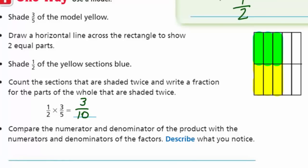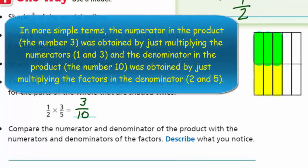Now let's compare the numerator and denominator of the product with the numerators and denominators of the factors. Describe what you noticed. I'm comparing my numerators and denominators. I see what's going on here — can't put this one past Mr. War! I am wide awake. I see one times three equals three, and two times five equals ten. The numerator of the answer is the product of the numerators of the factors. And the denominator of the answer is the product of the denominators of the factors. What an eye-opener!